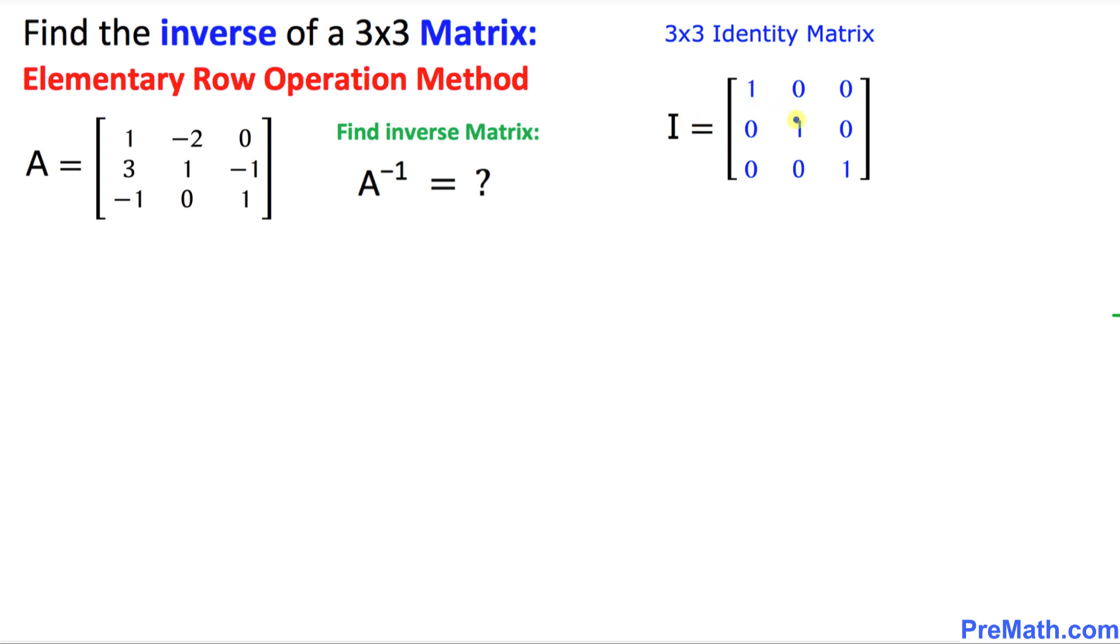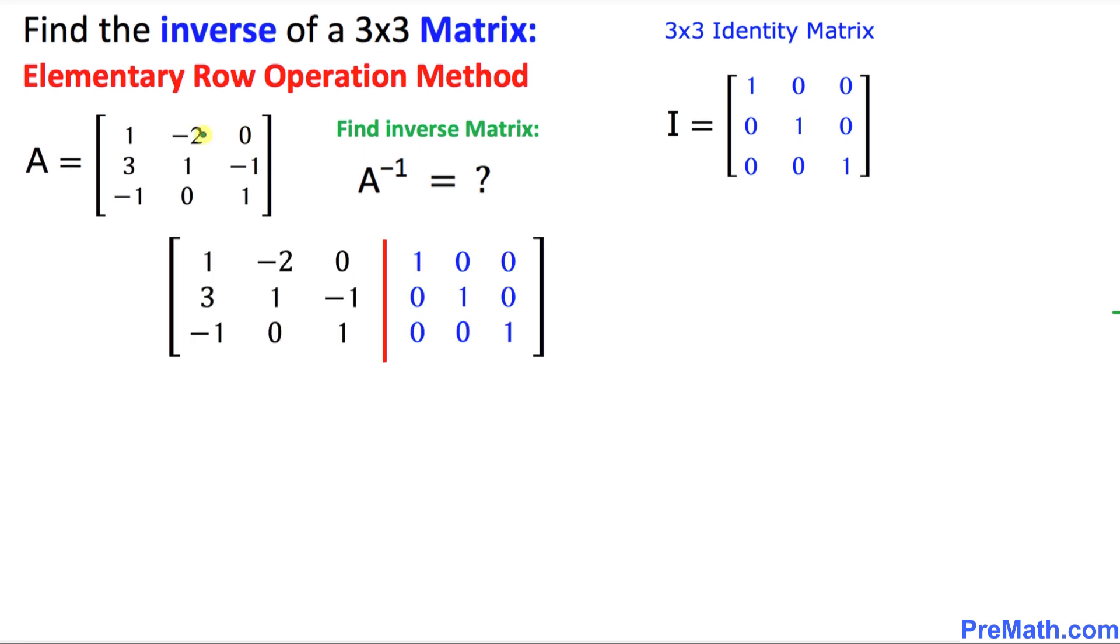As you can see in this identity matrix, the main diagonal has all 1s and the rest of the entries are 0. So before we get started with our elementary row operation,